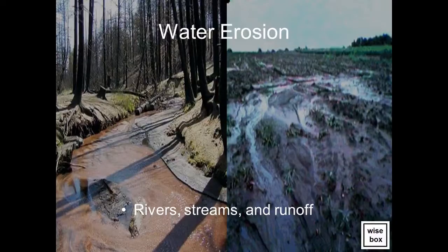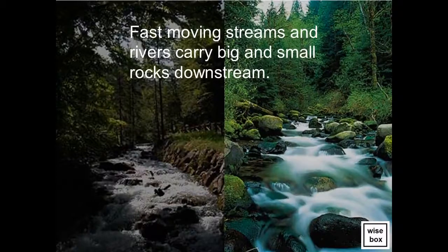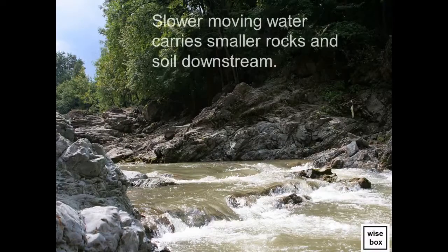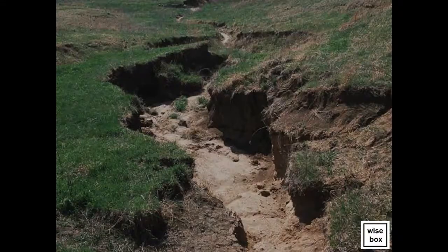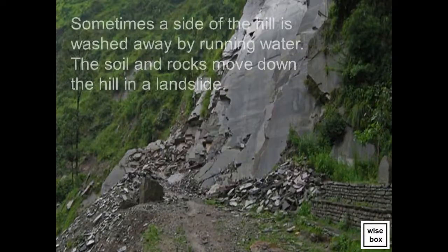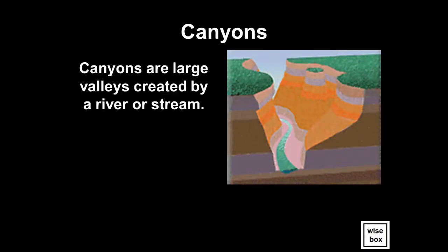Water erosion occurs on rivers, streams, and runoff. Fast moving streams and rivers carry big and small rocks downstream, while slower moving water carries smaller rocks and soil downstream. Moving water can also cause soil erosion, carrying the soil away to a different location. Sometimes a side of a hill is washed away by running water, and the soil and rocks move down the hill in a landslide.